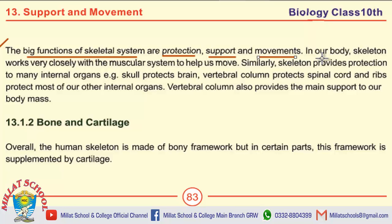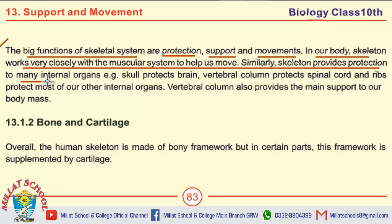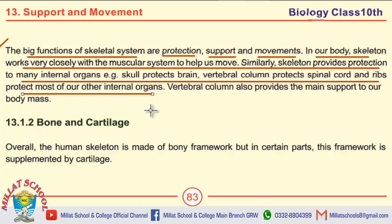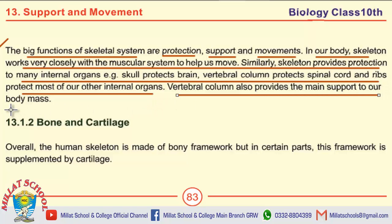Write the function of the skeletal system in movement: In our body, the skeleton works very closely with the muscular system to help us move. Similarly, the skeleton provides protection to many internal organs — for example, the skull protects the brain, the vertebral column protects the spinal cord, and the ribs protect most of our other internal organs. The vertebral column also provides the main support to our body mass.